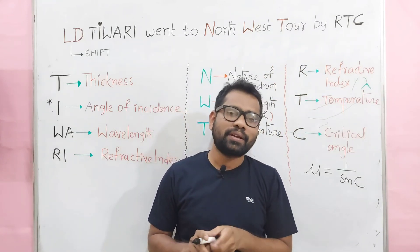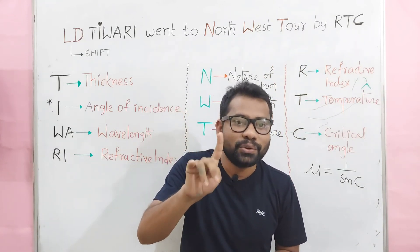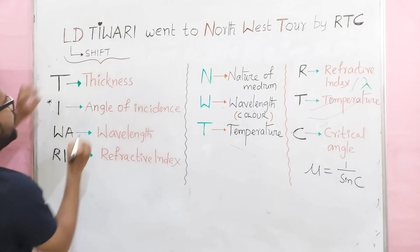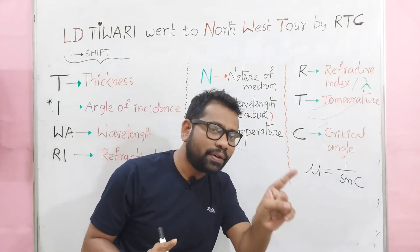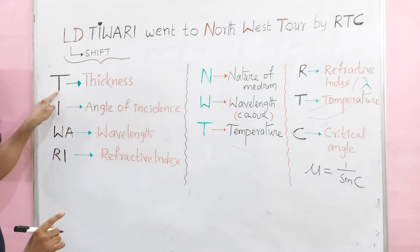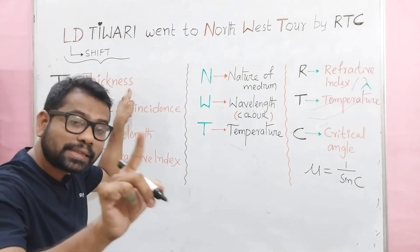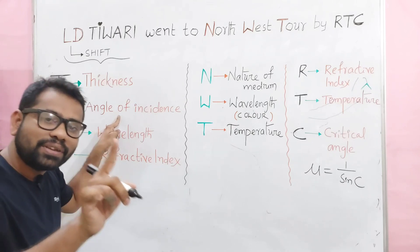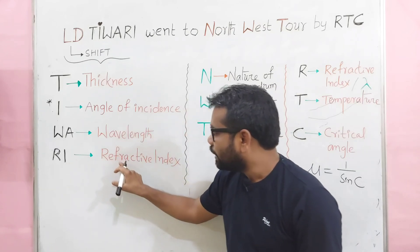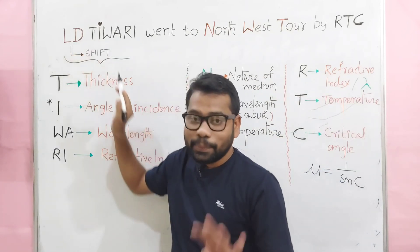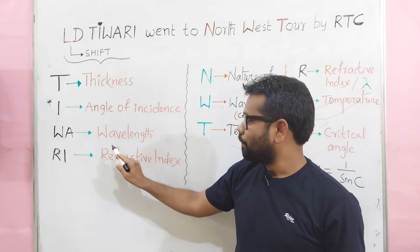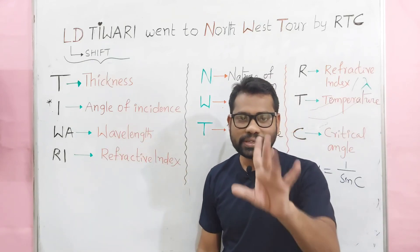Children, if you can remember this single statement, without confusion, 4 important answers you can learn. The first one: LD stands for lateral displacement. And in 'Tiwari' — T stands for thickness of the glass slab, I stands for angle of incidence, W stands for wavelength, and R stands for refractive index. So lateral displacement depends on 4 factors: thickness of the glass slab, angle of incidence, wavelength, and refractive index. This is the first answer.